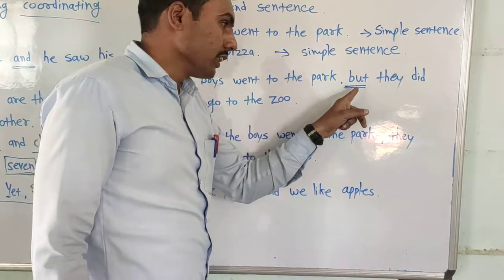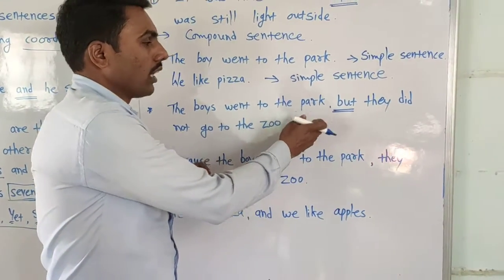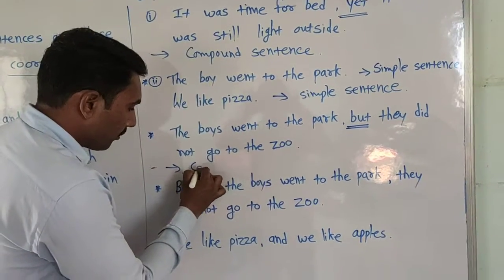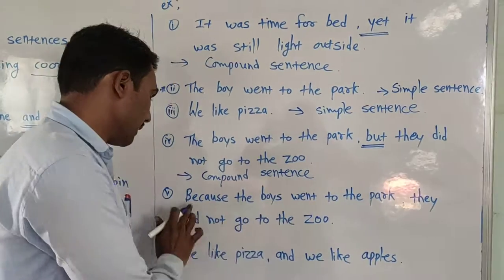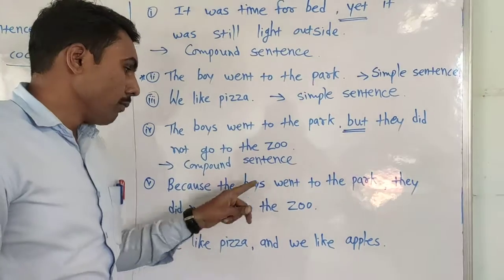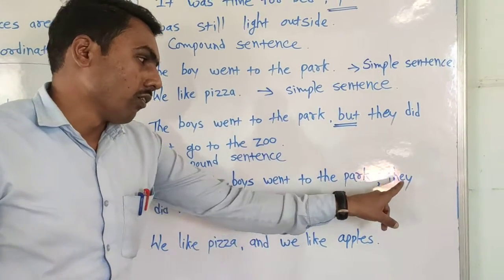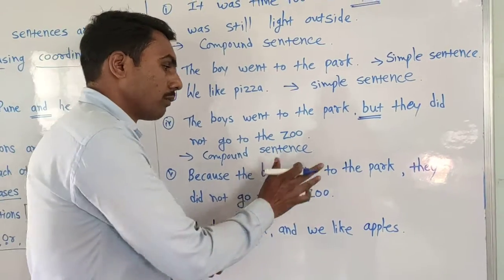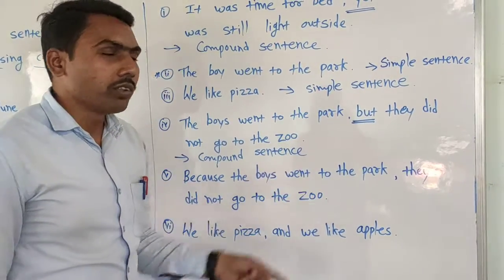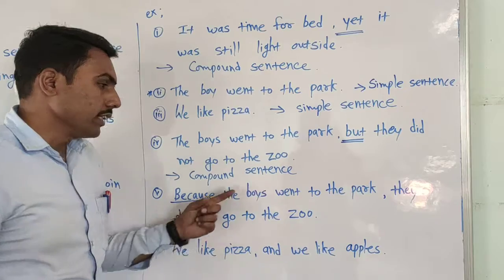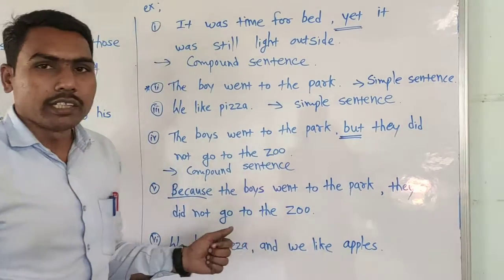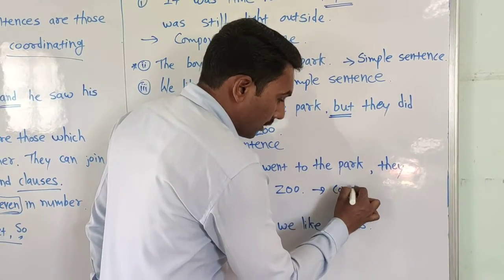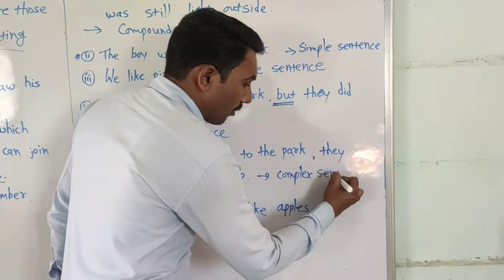Next example: 'The boy went to the park.' It is a simple sentence — simple sentence means one subject and one verb or one predicate. Now look here: 'The boys went to the park, but they did not go to the zoo.' In this example, two equal parts come and join with coordinating conjunction 'but', so that is a compound sentence. Now: 'Because the boys went to the park, they did not go to the zoo.' This is not joined with a coordinating conjunction, so it is a complex sentence.